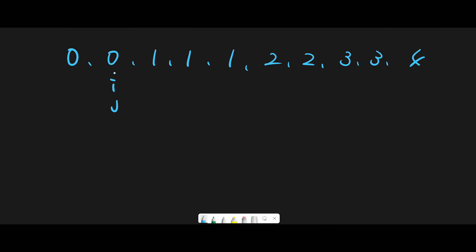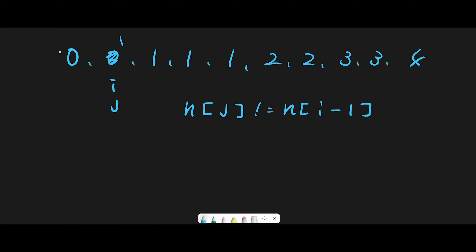Both i and j start at index one. We compare the element at j with the element at i minus one. The reason we use i minus one is that in the end, index one will hold a different unique number than index zero. For instance, in our example both index zero and index one start as zero, so we can use the number at index zero for comparison.